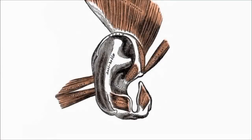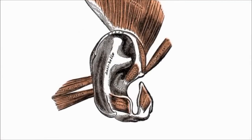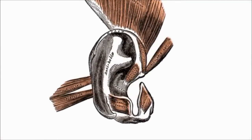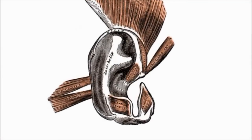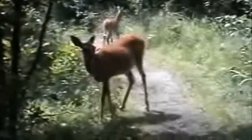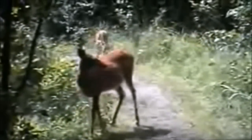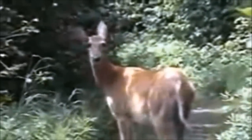Humans also have remnants of ear-wiggling muscles. There are three small muscles around each of the human ears that apparently have no function whatsoever. In other mammals, these muscles are often enlarged and serve an important function — such as in deer, that use them to turn their ears toward a source of sound. However, few humans can wiggle their ears, and none can turn them toward sound.